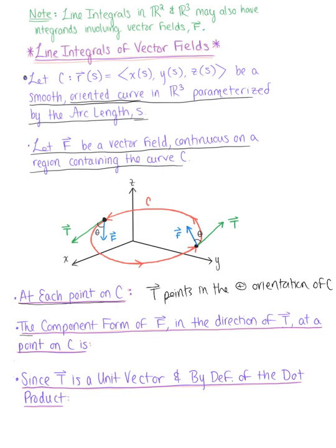So the component form of the vector field in the direction of the tangent vector at the point on C is defined by the magnitude of that vector field multiplied by cosine of theta, such that theta is the angle between these two vectors—the angle between the unit tangent vector and our vector field capital F.